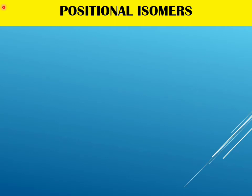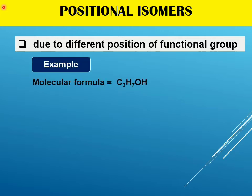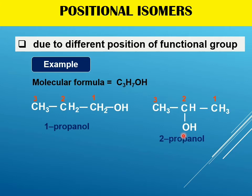Next, positional isomers. For positional isomers, the basic carbon skeleton remains unchanged — the length of the carbon chain stays the same — but we move the position of the functional group. For example, C3H7OH is made of 3 carbons with a hydroxyl group as the functional group. Placing the hydroxyl on the first carbon and on the second carbon in another compound forms 2 different positional isomers: 1-propanol and 2-propanol. The number of carbons is still 3; only the position of the hydroxyl group differs.